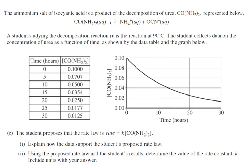Okay, the next part says the ammonium salt of isocyanic acid is a product of the decomposition of urea represented below. A student studying the decomposition reaction runs the reaction at 90 degrees. The student collects data on the concentration of urea as a function of time as shown by the data table and the graph below. So it says that the student proposes that the rate law is rate equals k times urea. And what's happening is that this is a first order rate law.